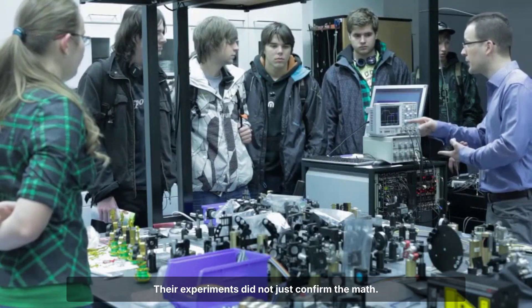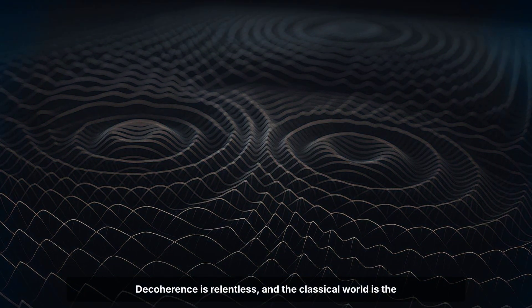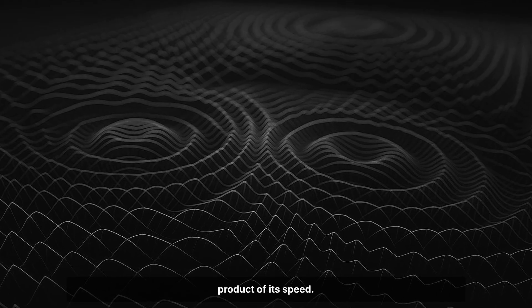Haroche and Wineland shared the Nobel prize for these achievements. Their experiments did not just confirm the math. They fought against decoherence, measuring its effects and stretching coherence times as far as possible. Every result pointed to the same conclusion: Decoherence is relentless, and the classical world is the product of its speed.